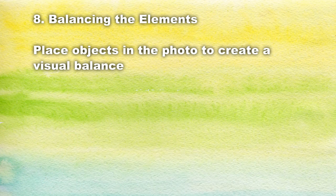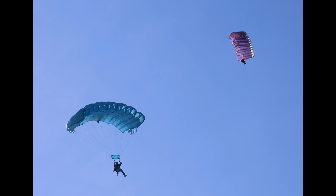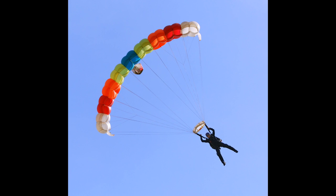Balancing the elements. Place objects in the photo to create visual balance. Visual balance is something you will figure out with time — it's not easily explainable. But for example, we have a picture of two parachutes, and if you imagine removing one, you would feel that something is missing. Or this picture where you have one parachute in the upper left corner and the person in the lower right corner — they create a balance. Sometimes you'll just feel that something is missing, and that could be another object that balances the picture.